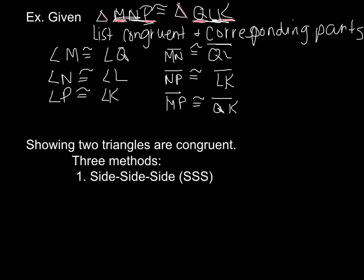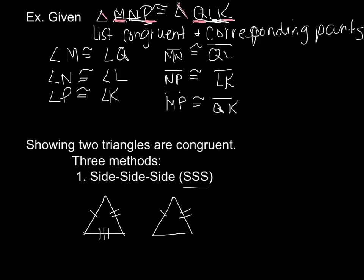Our first method is side-side-side, or SSS — if all three sides are congruent. If this side is congruent to this side, this side is congruent to this side, and this side is congruent to this side, we know the triangles are congruent. Corresponding means they're the same corresponding side and they're congruent — the same length.